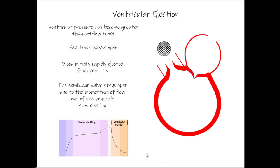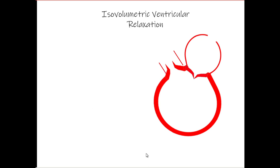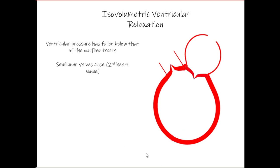Eventually the pressure in the ventricle becomes less than the pressure in the aorta again, causing the aortic valve to close. When the aortic valve closes, that accounts for the second heart sound. This is the period of isovolumetric ventricular relaxation — isovolumetric meaning no change in volume, so all valves must be closed. With all valves closed, the pressure in the aorta is greater than in the ventricle, and the pressure in the ventricle is greater than in the atria, which keeps all valves closed.